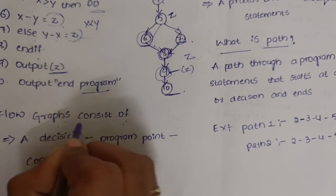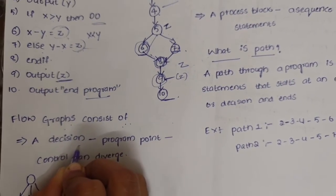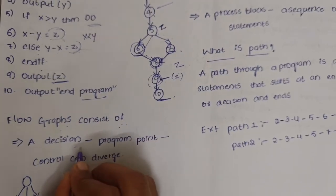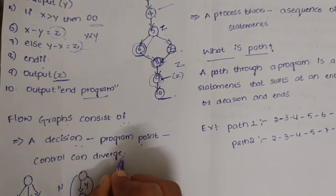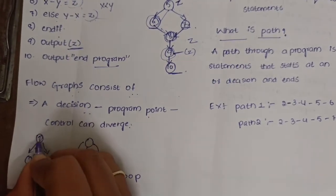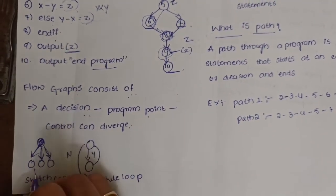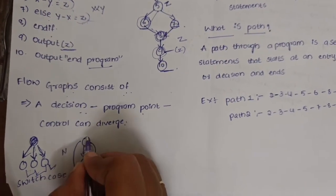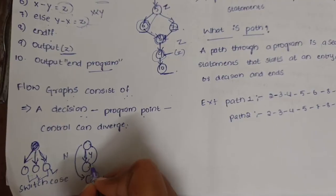A decision in a flow graph is a program point at which control can diverge. For example, a switch-case statement can have three possible outputs, with one maximum output considered. In a while loop, if the condition is true the loop body is executed; if not, control goes back and the output is produced.